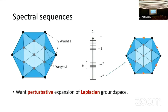We want to analyze the spectrum of the Laplacian of this complex — similar to analyzing an effective Hamiltonian in the low energy subspace. But if you want to do perturbation theory on this object, it turns out to be way too difficult — we'd need to go to very high orders. The spectral sequence machinery allows us to do this tractably.